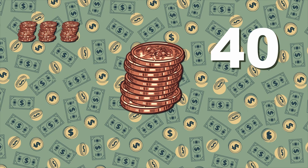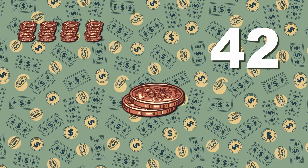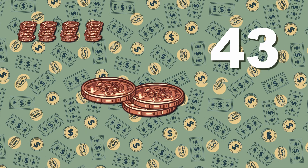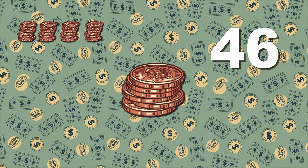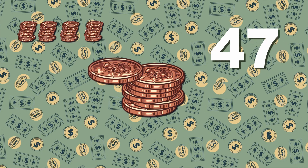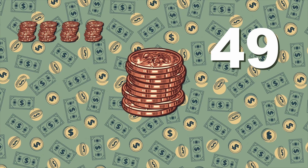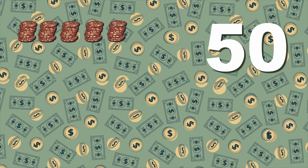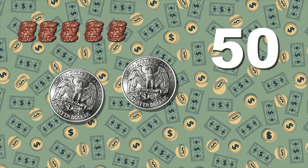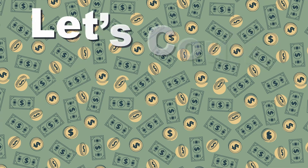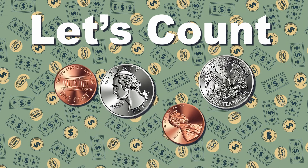37, 38, 39, 40 — we're counting for the win. 41 pennies, 42, and 43, 44, 45, then 46 is what you see. 47, 48, 49, and 50 pennies. One half dollar is the amount of 50 pennies.